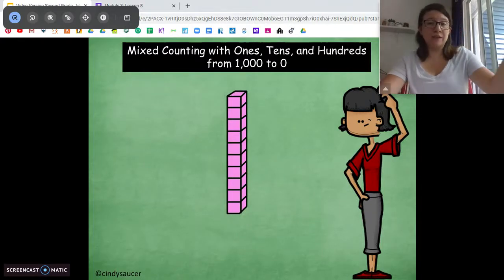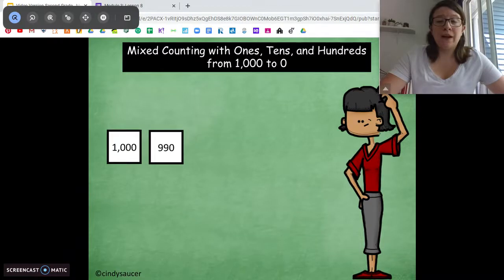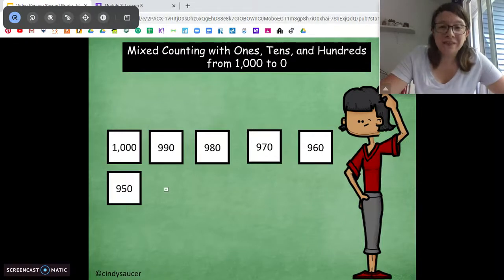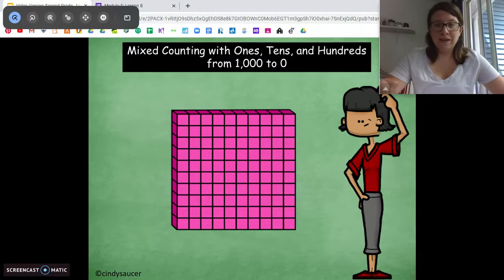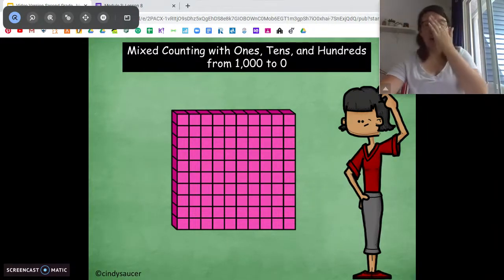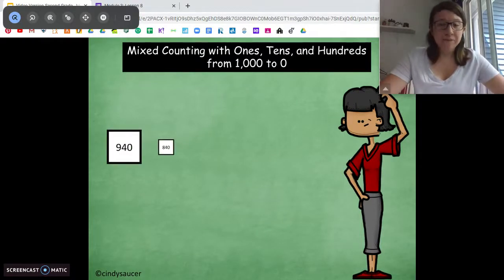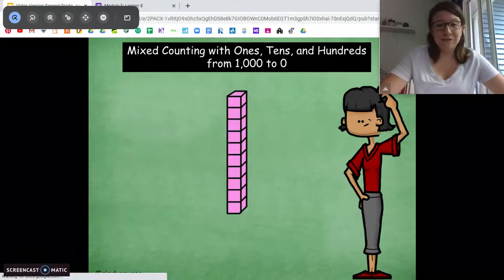Here we go. So what are we going to start counting with first? Tens. Good. So we're going to start at $1,000, counting backwards by tens. $1,000, $990, $980, $970, $960, $950, $940. Oh, now what are we going to count by? Hundreds. Good. Starting at 940, we're counting backwards, counting backwards by hundreds. 940, 840, 740, 640, 540.